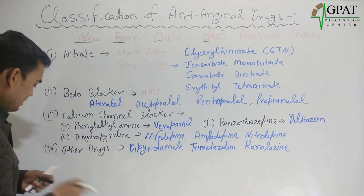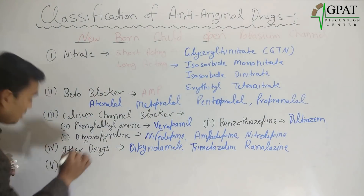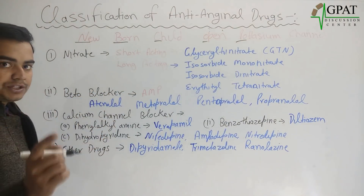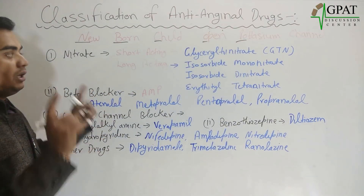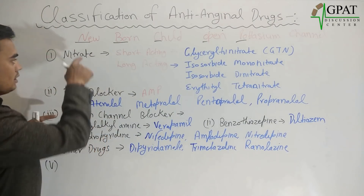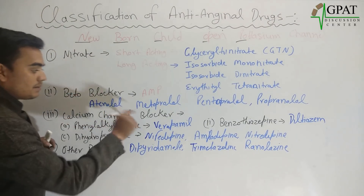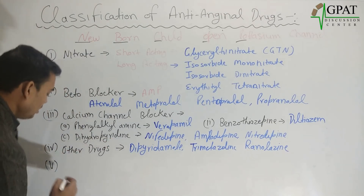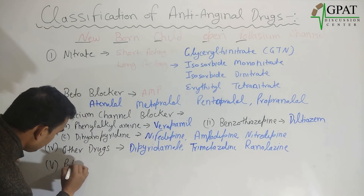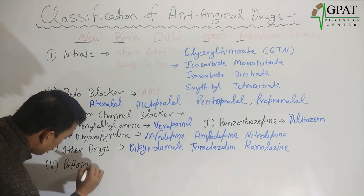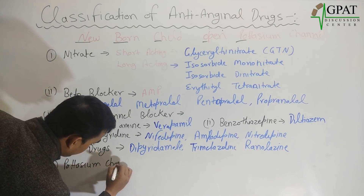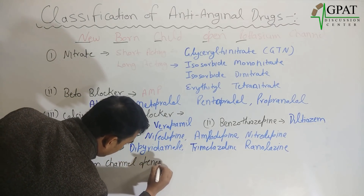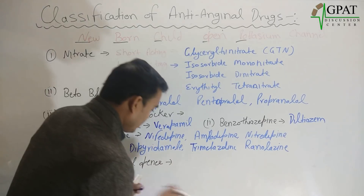The fifth class, from 'P' for potassium channel — note that while other classes are blockers like beta blocker and calcium channel blocker, here it is a potassium channel opener, not a blocker. The drug name is nicorandil.